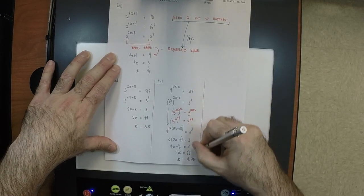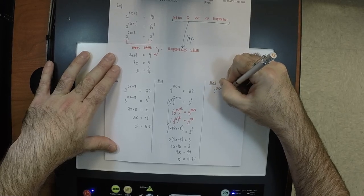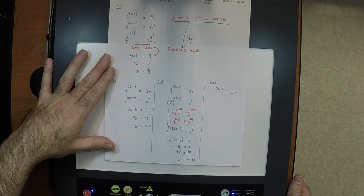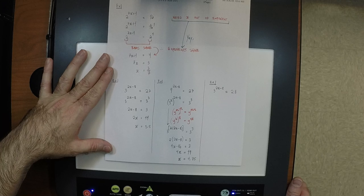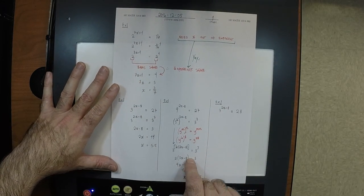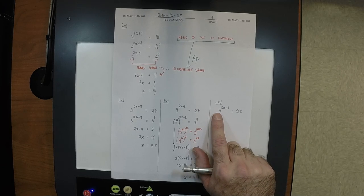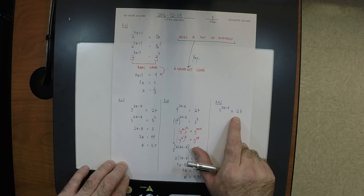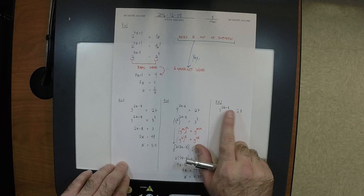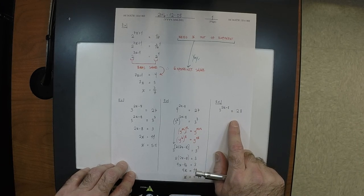But how about this one: 3 to the power of 2x minus 8 equals 28? Now we've got a real problem. The left-hand side is exponential base 3, and the right-hand side is base 28. You probably can't think of some exponent that would make these cooperate. This is what we need to overcome today — we need to be able to solve this.